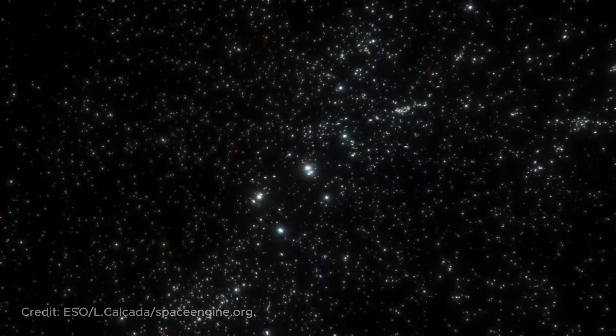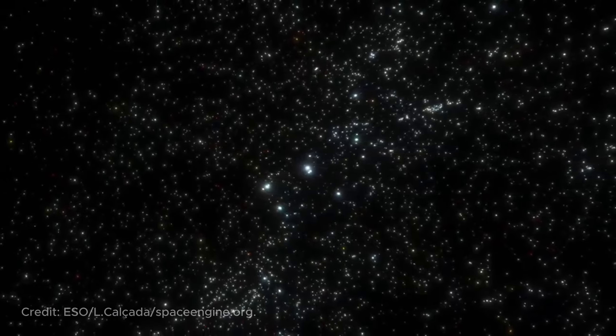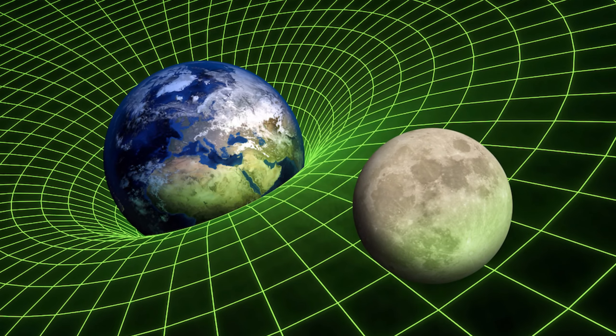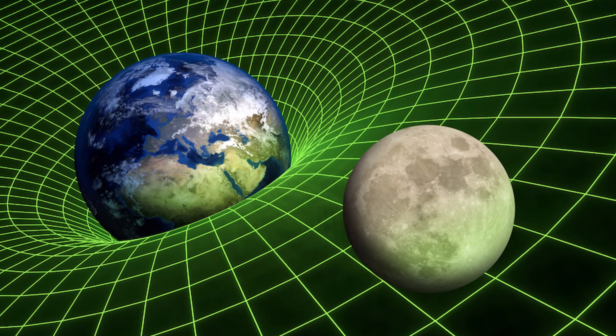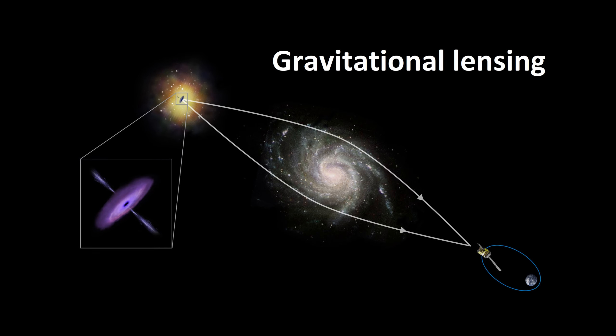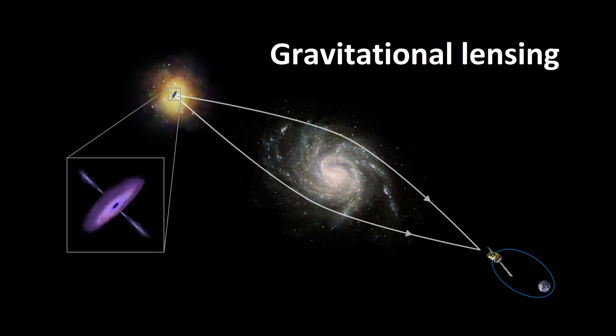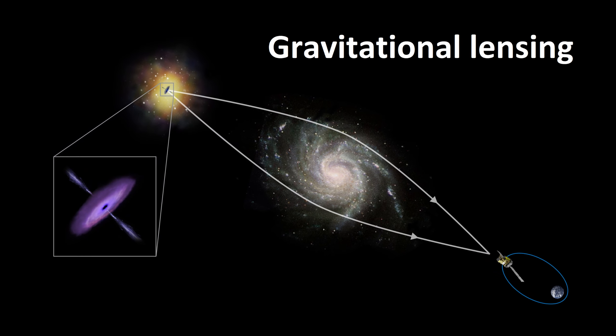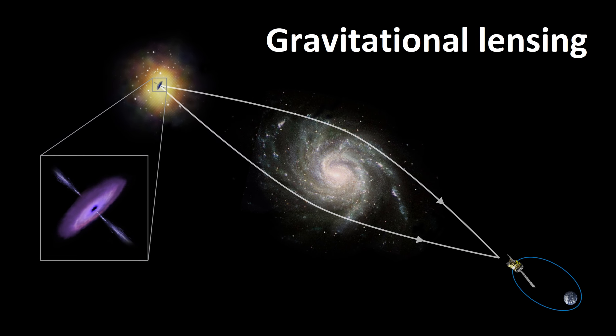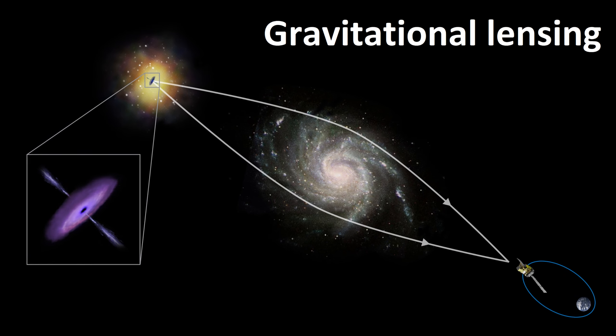But how can we find dark matter if it can essentially pass through our fingers? The thing is, one type of interaction is inherent to dark matter: gravity. And one of the most important tools for searching for dark matter is gravitational lensing. This method allows us to determine the mass of large cosmic structures, such as galaxies and galaxy clusters, in accordance with the theory of relativity. The mass of matter can influence the surrounding space, deforming it, and bending light rays.